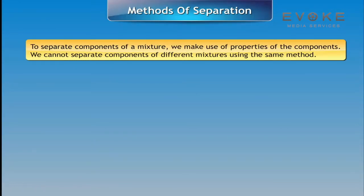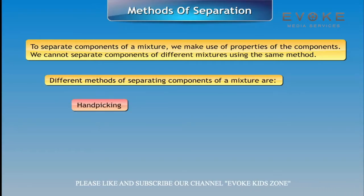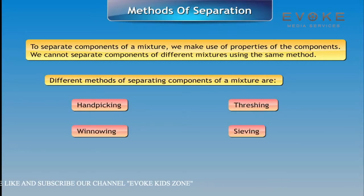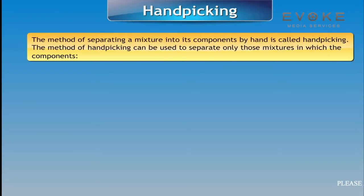Methods of separation: To separate components of a mixture, we make use of properties of the components. We cannot separate components of different mixtures using the same method. Different methods of separating components of a mixture are: hand-picking, threshing, winnowing, sieving, sedimentation and decantation, filtration, and evaporation.